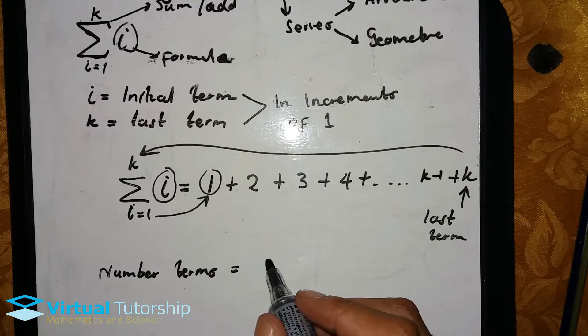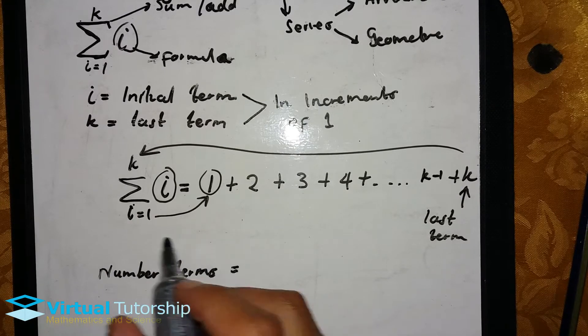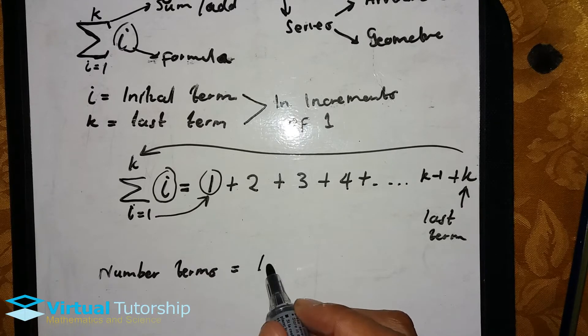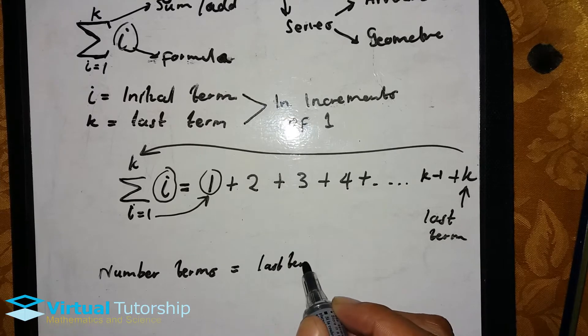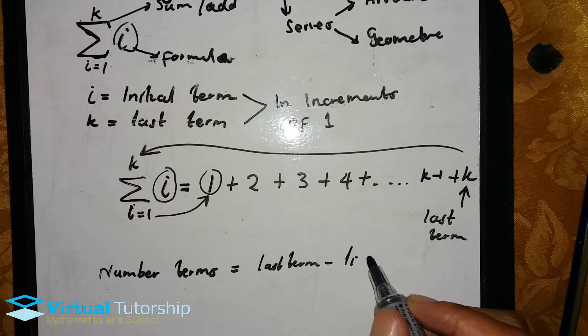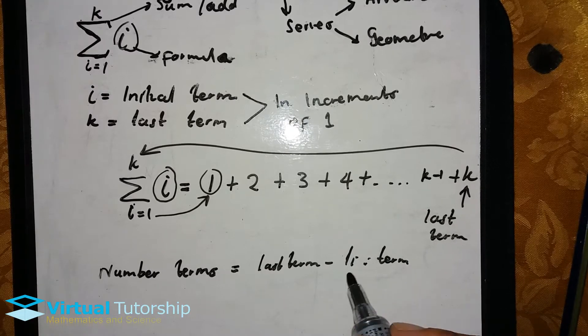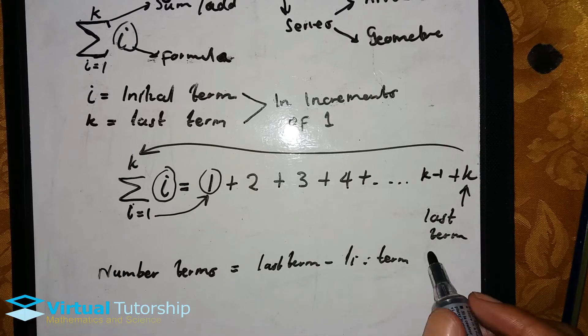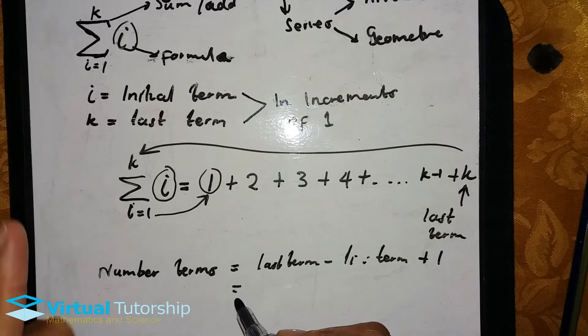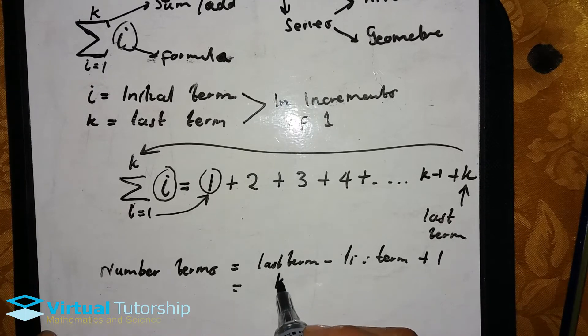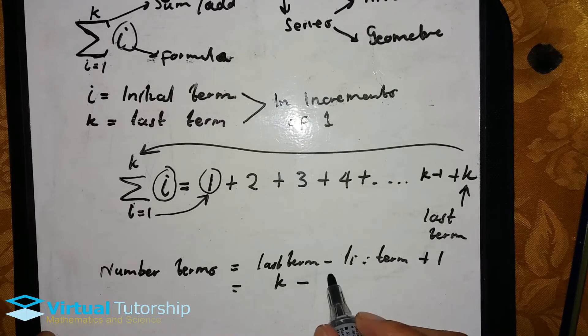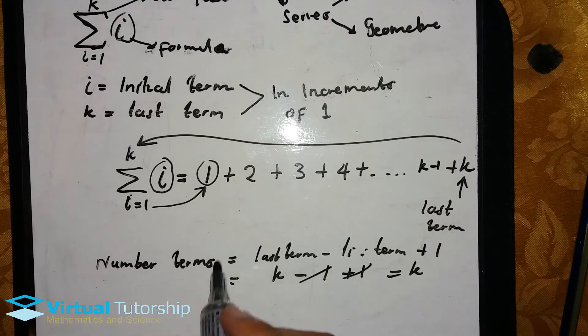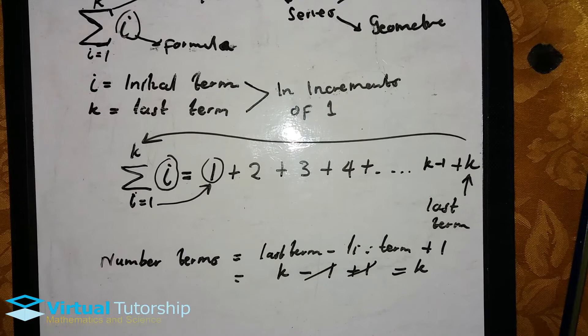Now see how to calculate the number of terms in this Sigma notation. The number of terms is calculated as: the last term minus the initial term, plus one. So this is k minus one plus one, which cancels out, so the number of terms is equal to k.